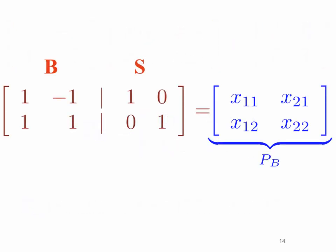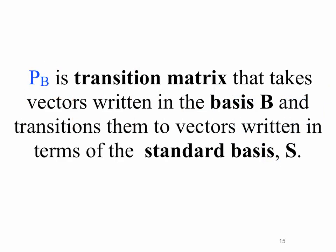On the left-hand side of the augment we have the basis vectors for B, and on the right-hand side we have the basis vectors from S, the standard basis. When we solve that system of equations, we find the matrix that takes us from the standard basis to basis B. P of B is called the transition matrix that takes vectors written in basis B and transitions them to vectors written in terms of the standard basis S. Later, we'll see you can use the same technique to transition from any basis T to another basis S in the vector space V.